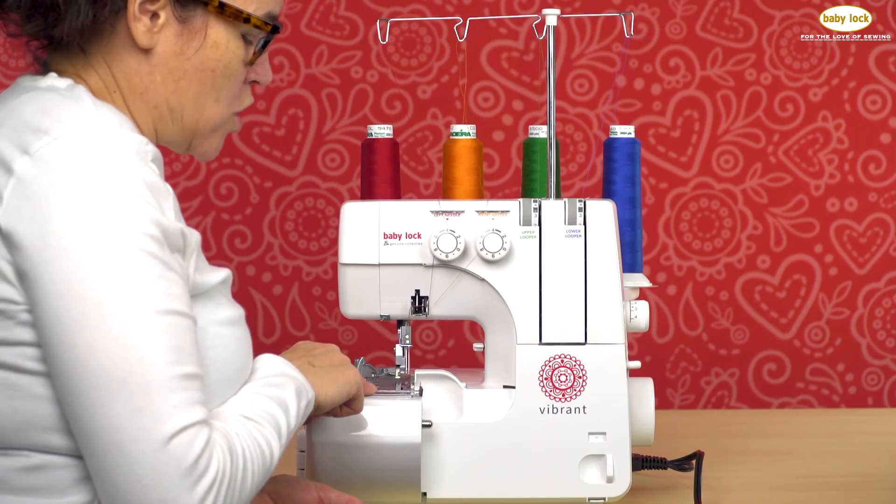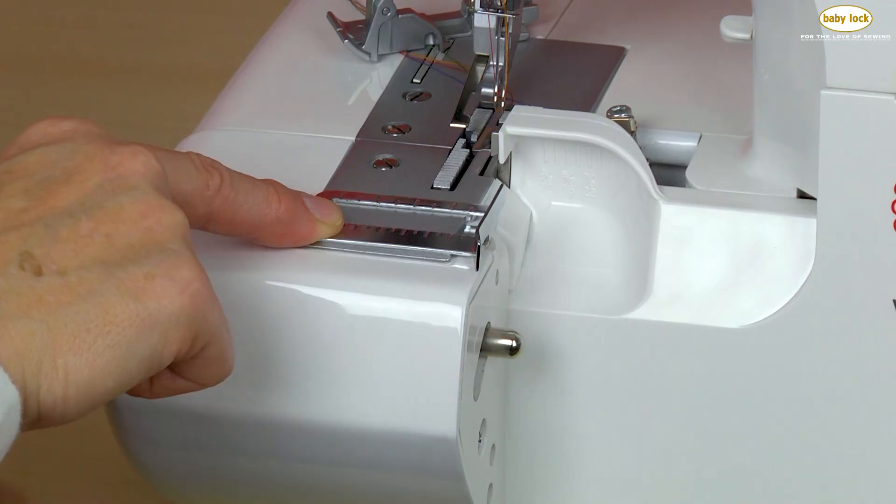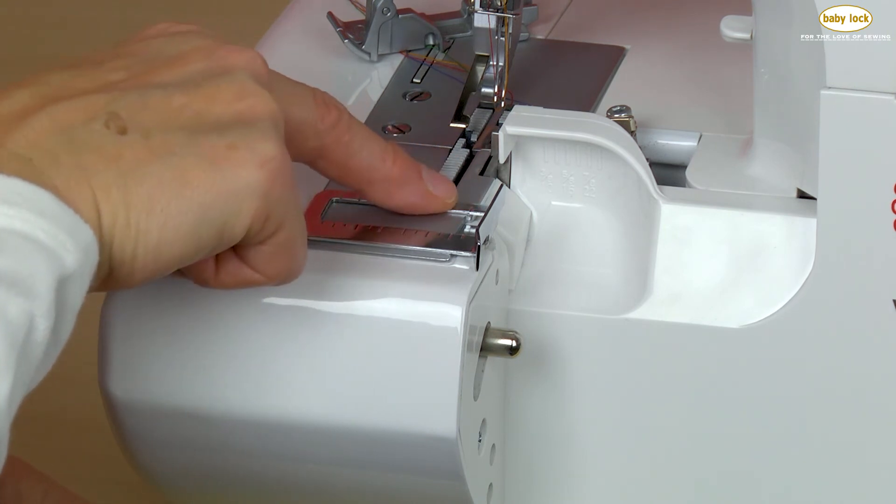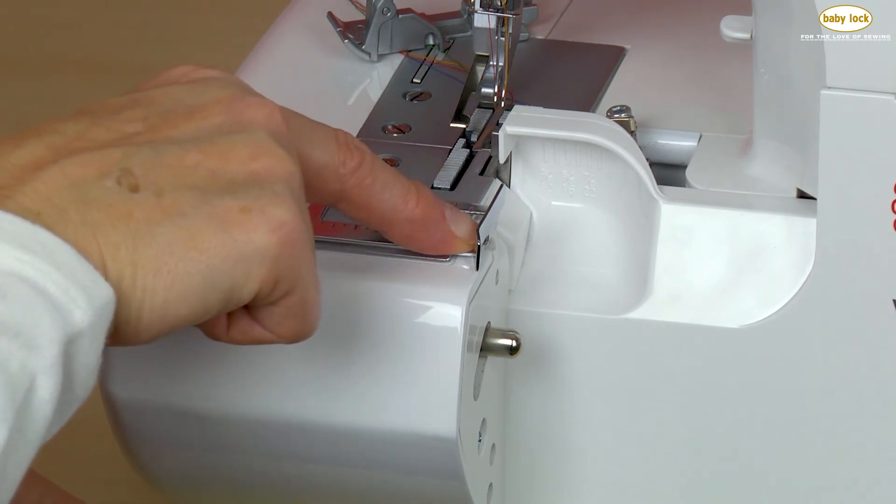The cutting width gauge or guide is a great way to make your seams consistent and accurate because you have something to judge where the edge of your fabric should sit as you're stitching.